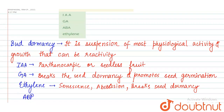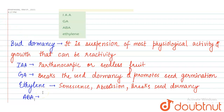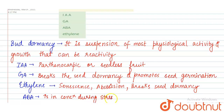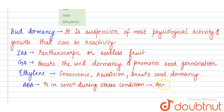The last option was abscisic acid. Abscisic acid is also known as the stress hormone, as its concentration increases during stress conditions. When the concentration of abscisic acid increases during stress conditions, it induces bud dormancy.